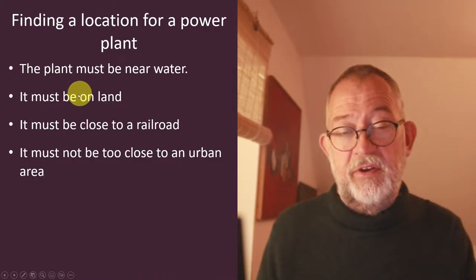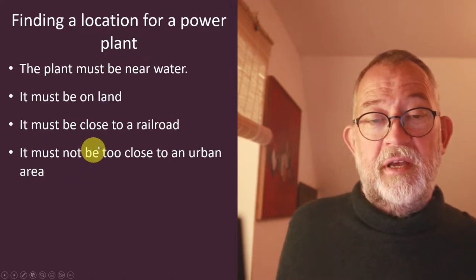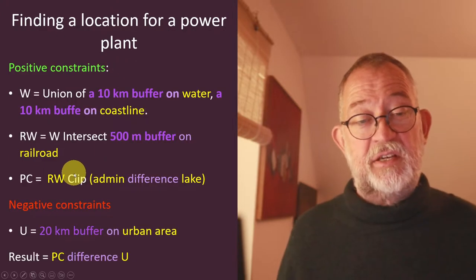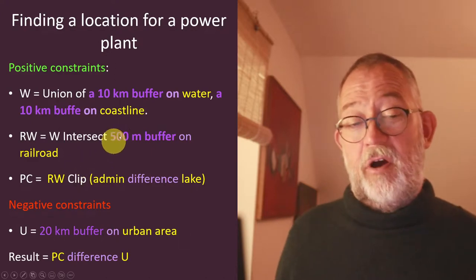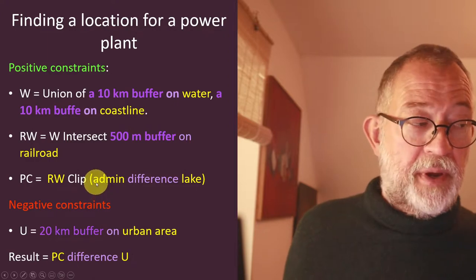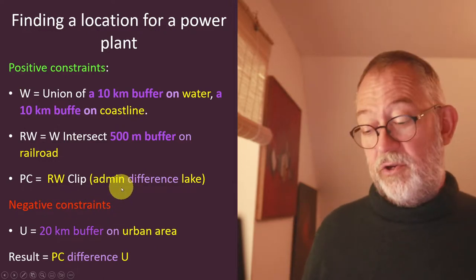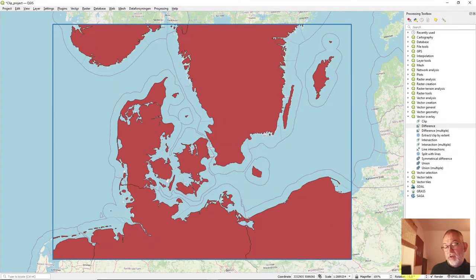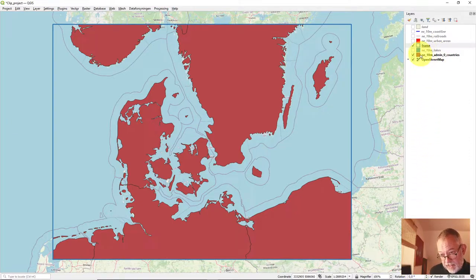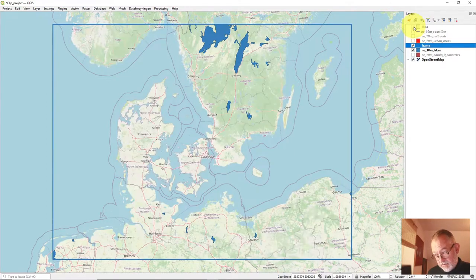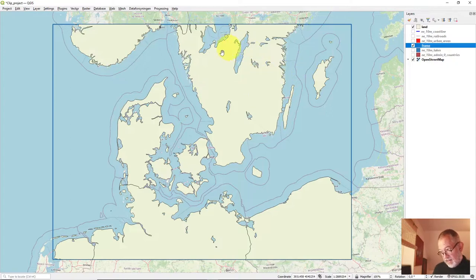In the earlier episodes I talked about how we could convert the problem of where we could place an effective power plant — based on some text descriptions — to something that is a combination of data layers and operations we can implement in our GIS. I have collected different layers in QGIS: a frame layer, the Natural Earth admin data, and a land layer which is basically admin with lakes removed.